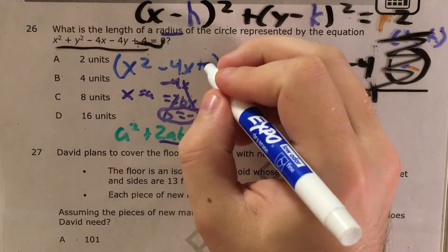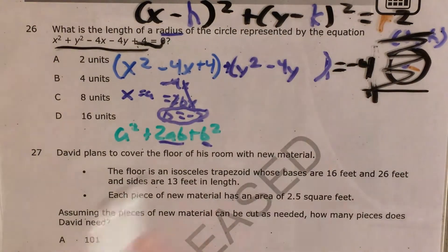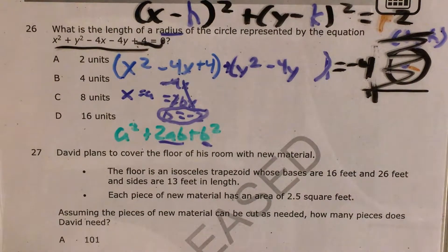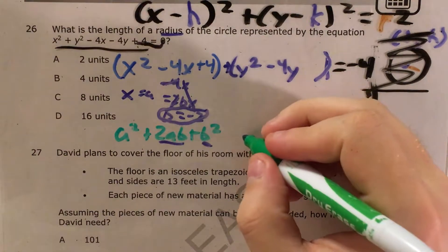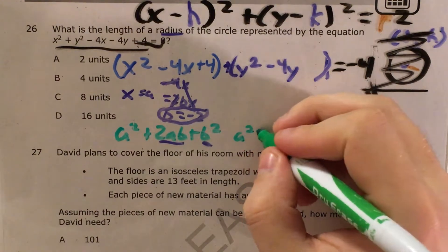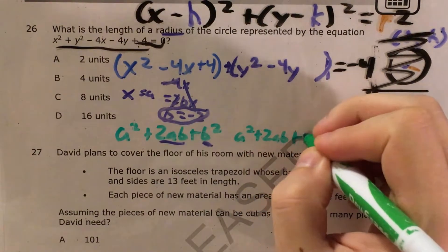So this will be x squared minus 4x plus 4. And I'm going to do the same thing with y's, and this looks very similar, so I'm just going to walk through the process one more time.